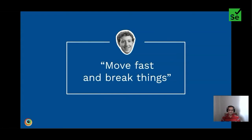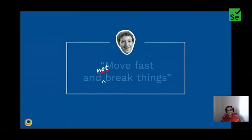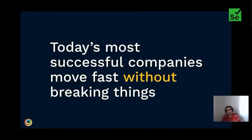"Move fast and break things" worked, but only up to a certain point. Beyond a certain level of product maturity, quality became critical — more and more people would be affected when a bug hit production. Take Facebook as an example: a minor oversight led to millions of dollars in losses per minute. Mark Zuckerberg realized that fixing bugs on production slowed them down in the long run. Facebook had outgrown its motto. As more companies digitally transformed and matured into software companies, it became apparent that breaking things was not okay. Today's most successful companies move fast without breaking things.